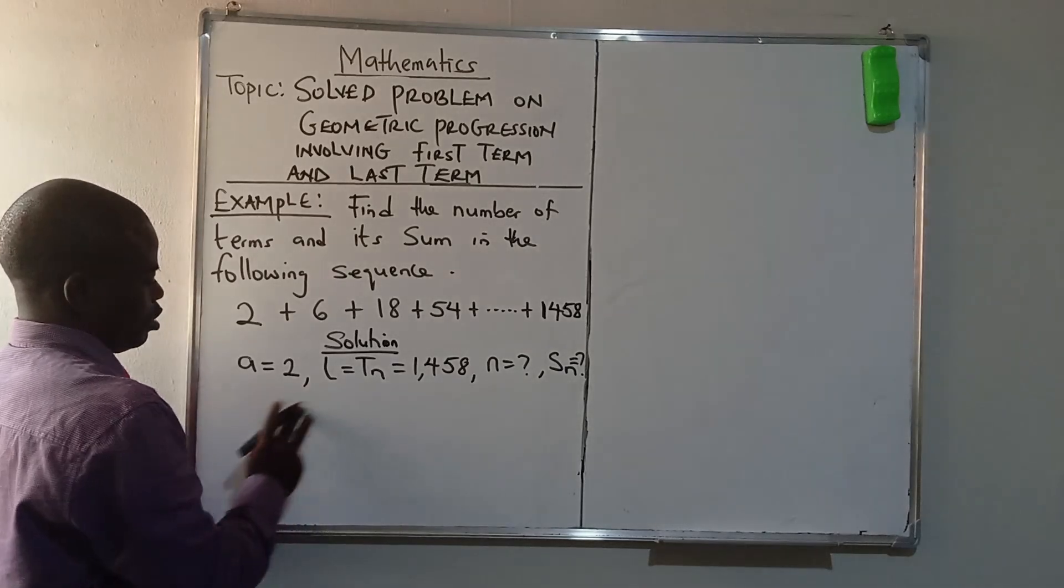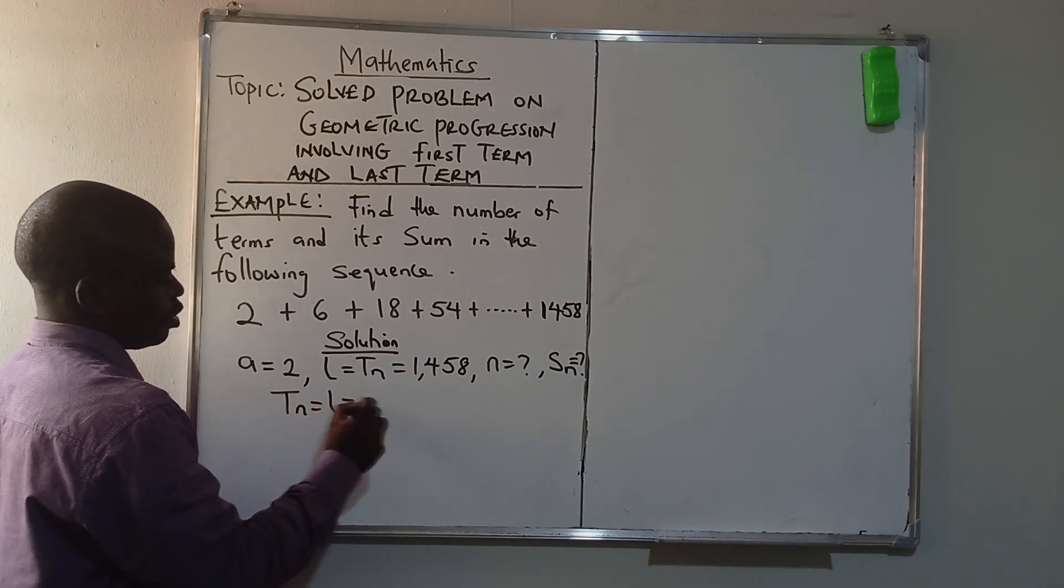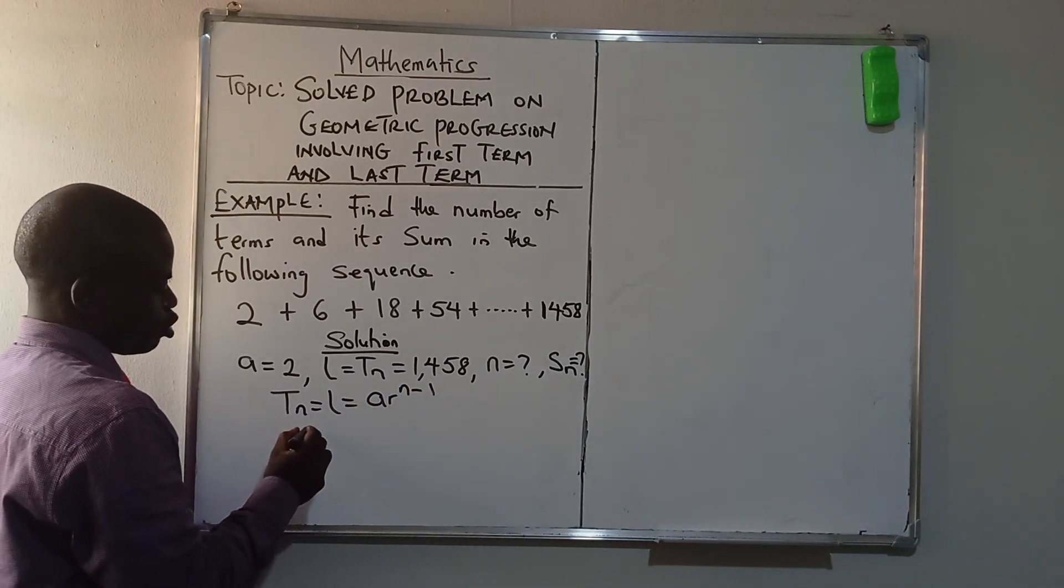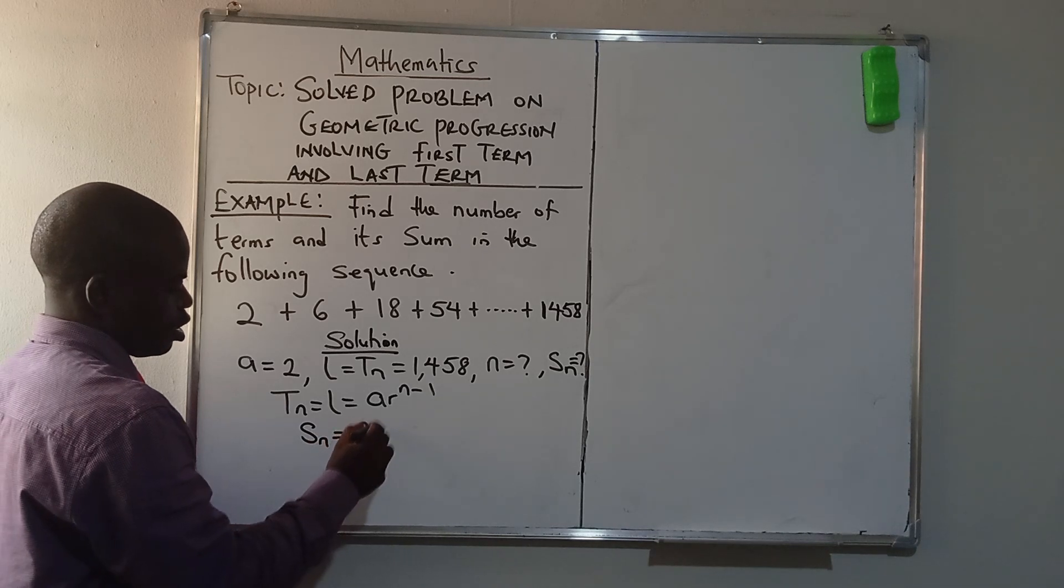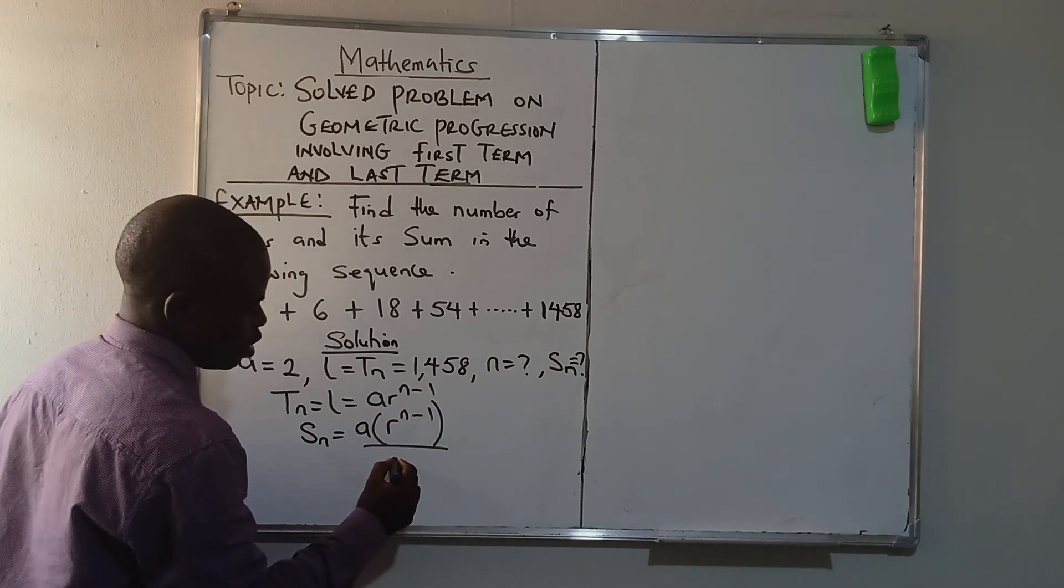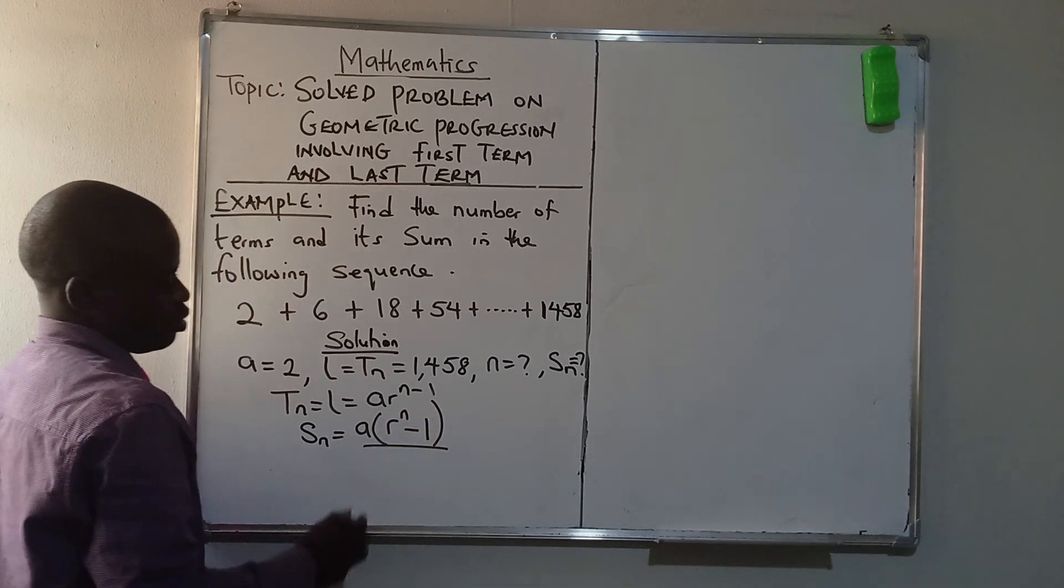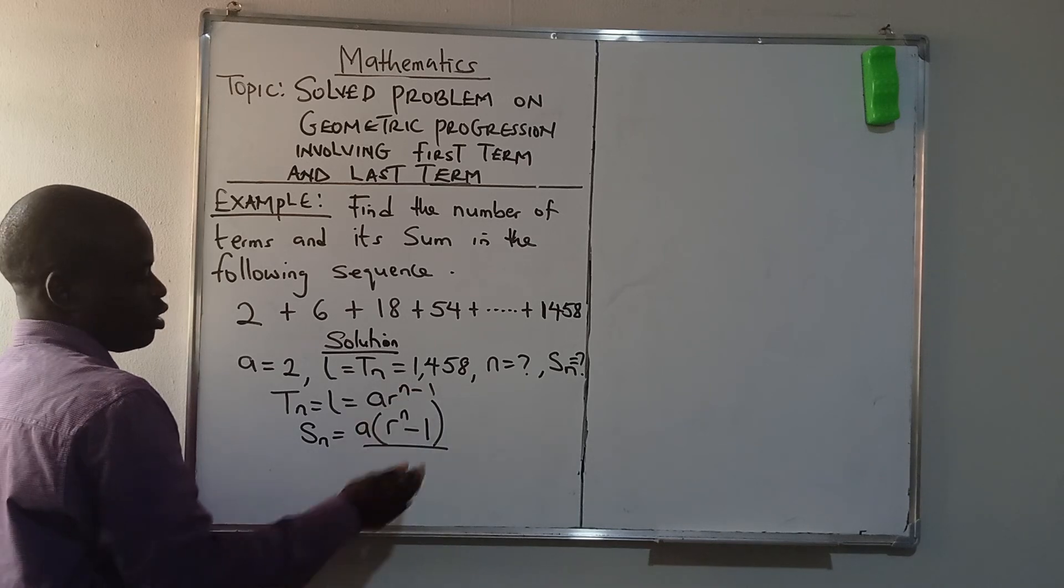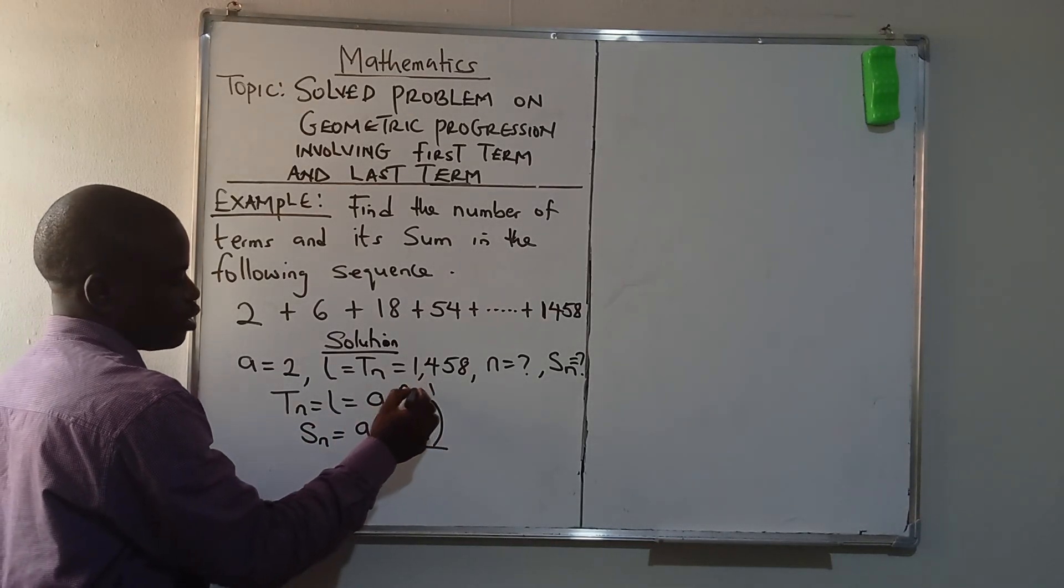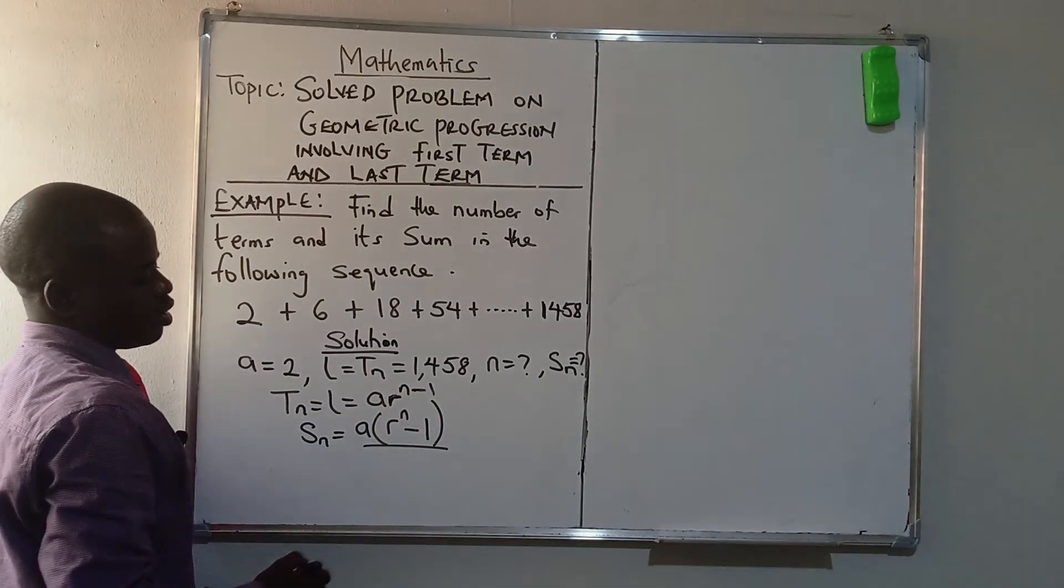Okay, now let's go. The formula that we need to consider is N term, which is the last term TN = A·R^(N-1). And there is another formula for sum, which is A·(R^N - 1) over R - 1. The minus 1 is not raised to power here. When we are looking for the last term, N minus 1 is raised to power of this R.